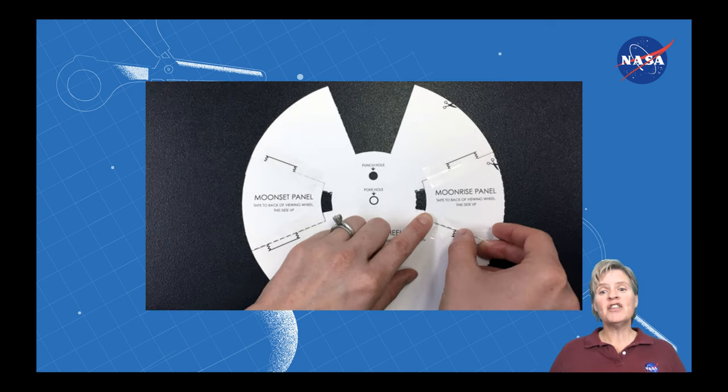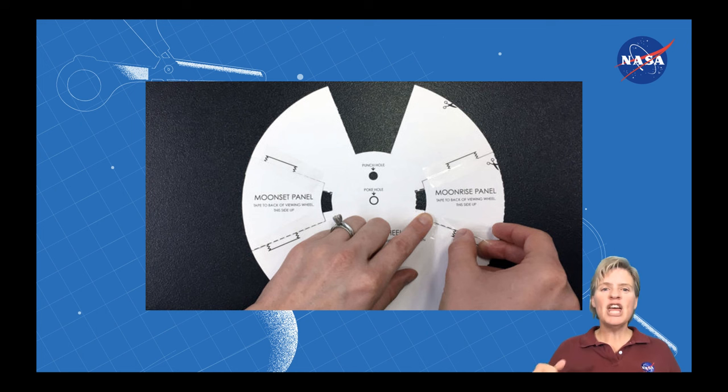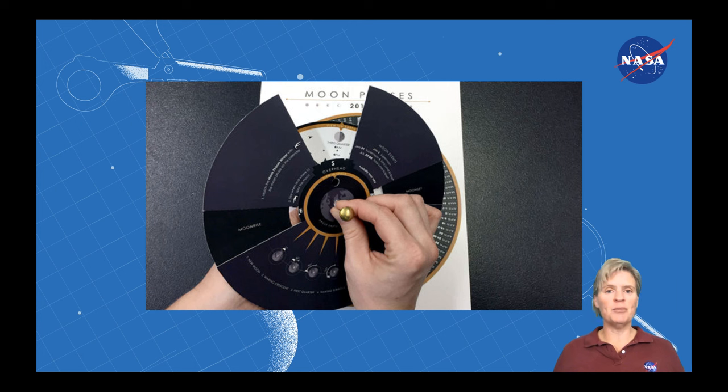Next, take the moonrise panels that you cut out and tape those to the back of the viewing panel. Now it's time to assemble your moon phase calendar and calculator. You're going to assemble it just as shown right here.